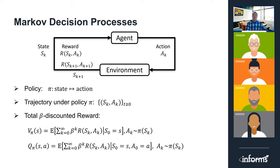The performance of a policy pi is measured by its value function. Specifically, the V-function of a policy pi at state s is defined to be the expected total reward starting from state s and then following the policy pi thereafter. Similarly, the Q-function of a policy pi at state-action pair (s, a) is defined to be the total expected reward starting from state s, first taking action a, and then following policy pi thereafter. The goal of the agent is to find an optimal policy pi star that maximizes the V-function, which is the same as maximizing the Q-function.